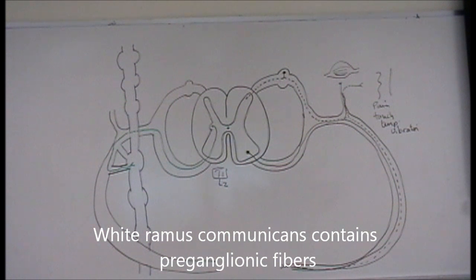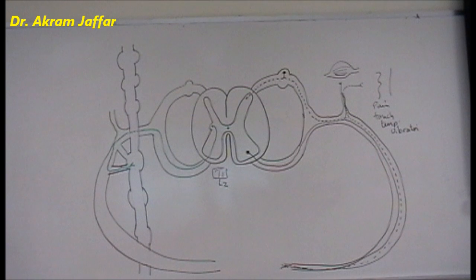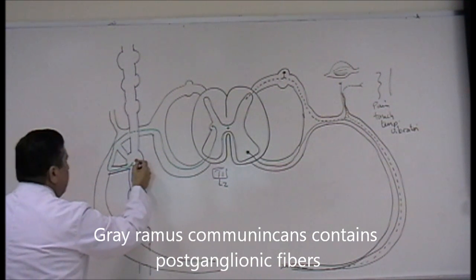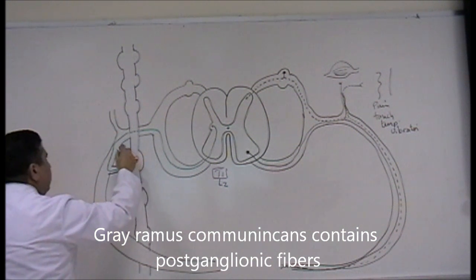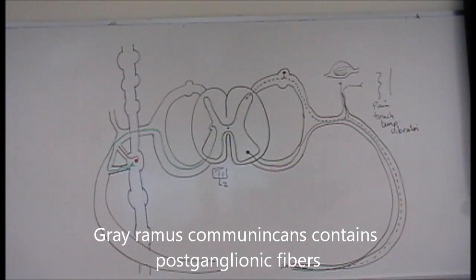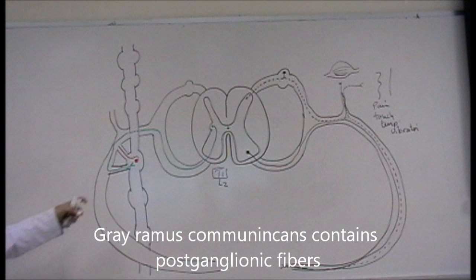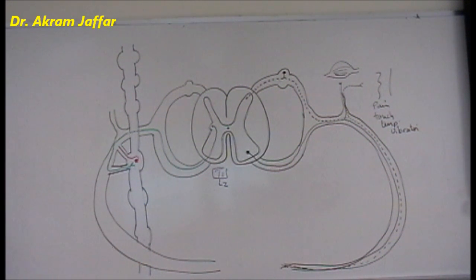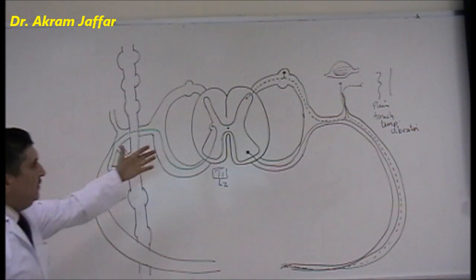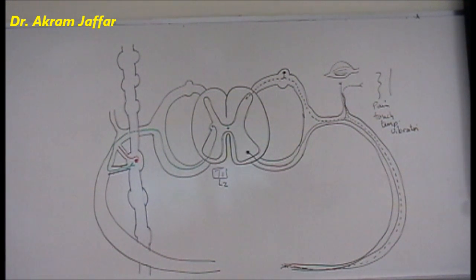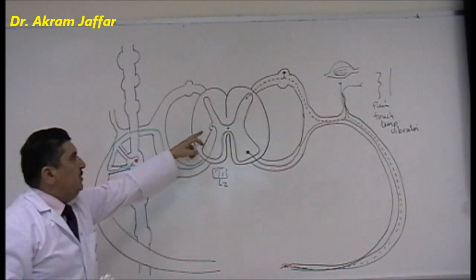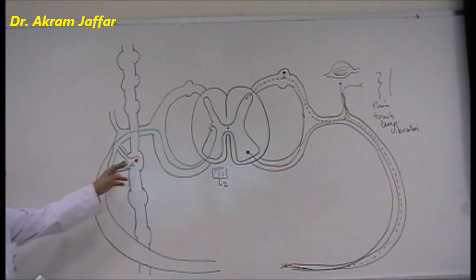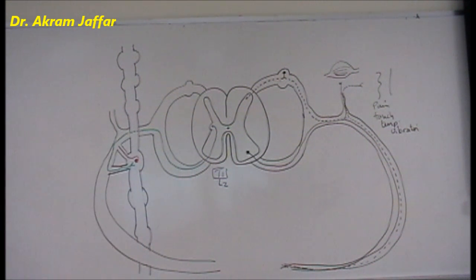Within the ganglion, the postganglionic fiber's axon leaves through another rami communicans — this one containing postganglionic fibers is called the gray ramus communicans, because these are unmyelinated nerve fibers, while the white ramus communicans carries myelinated preganglionic fibers. So the efferent pathway in the sympathetic nervous system includes two neurons: the first neuron has its cell body in the lateral horn of the spinal cord, and the second has its cell body in the sympathetic ganglia.